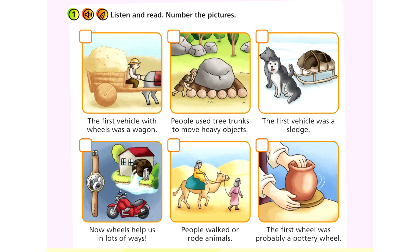1. More than 5,000 years ago, people walked or rode animals. 2. People used tree trunks to move heavy objects. 3. The first vehicle that people used was a sledge.